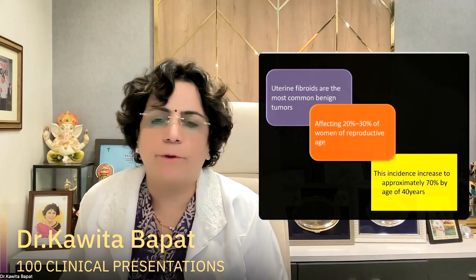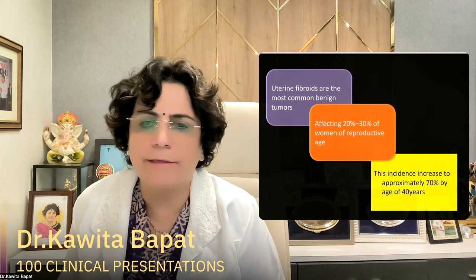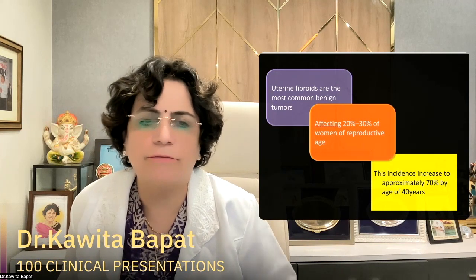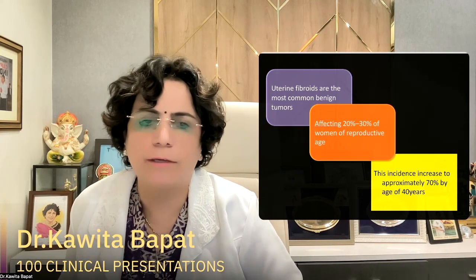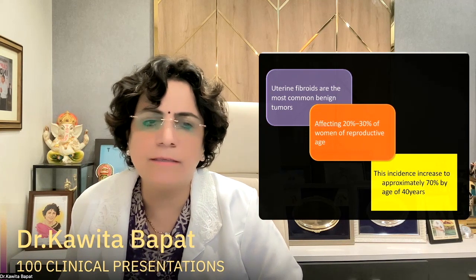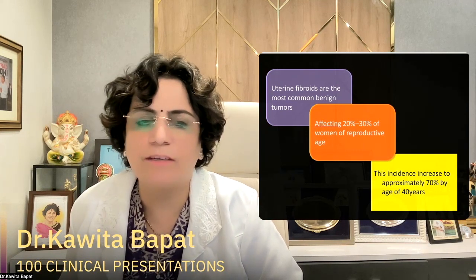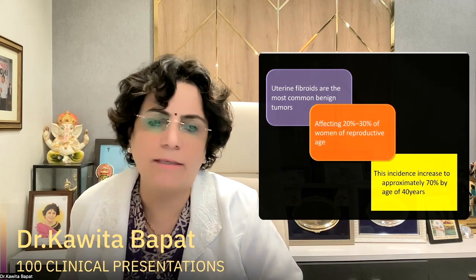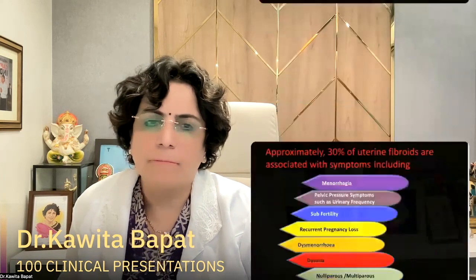Uterine fibroids are the most common benign tumors, affecting 20 to 30 percent of women in the reproductive age group, and the incidence increases to approximately 70 percent by the age of 40 years.